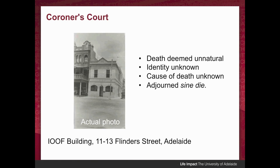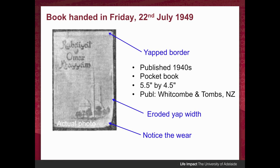The case was adjourned sine die — meaning without a date for further sitting — in other words, the case is open. After the inquest there was a huge media drive with lots of reports about the results and much talk about the Tamam Shud piece of paper and The Rubaiyat of Omar Khayyam. The papers put out appeals asking if anyone had a book with the back page torn out with Tamam Shud removed. On the 22nd of July, a man walked into a police station with a copy of the Rubaiyat of Omar Khayyam saying that the relevant page had been ripped and he found this in the back seat of his car.